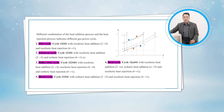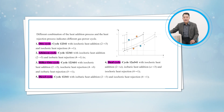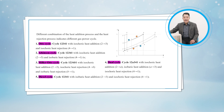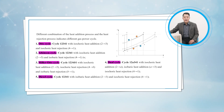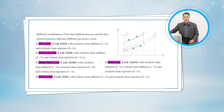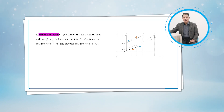The fifth one: when cycle 1-2-3-4-1 is with isobaric heat addition and isochoric heat rejection, the cycle is the Diesel cycle. This means in figure 10-38, state A is merged with state 2, state B is merged with state 1, and the Diesel cycle is the cycle 1-2-3-4-1.